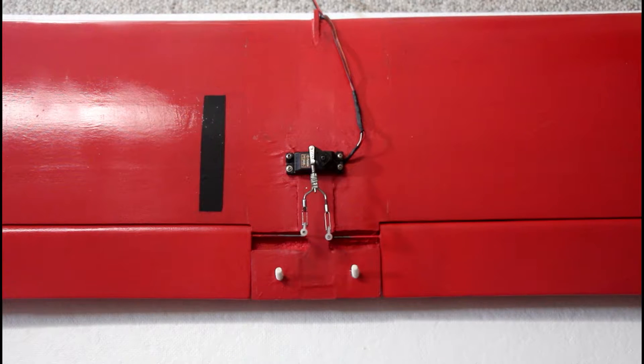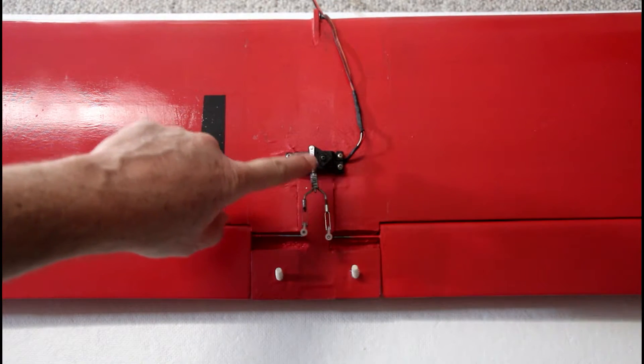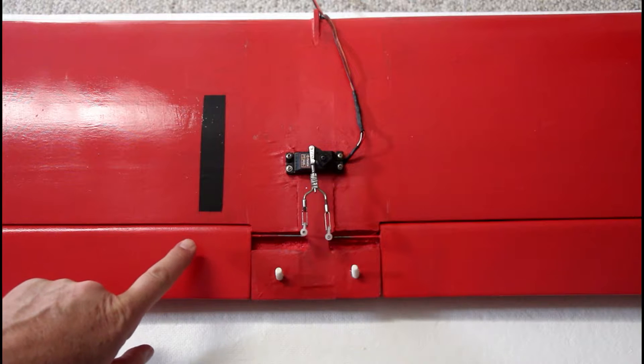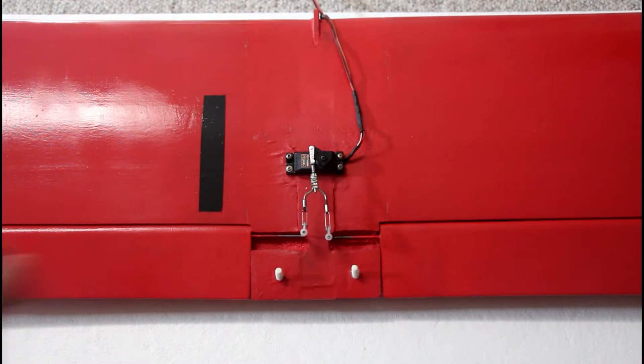Hi there, this is the RV4 wing. It's the Great Plains RV4 56-inch span kit. I had the flaps set up with a single servo and a soldered-together pushrod that goes between the left and right hand flap.